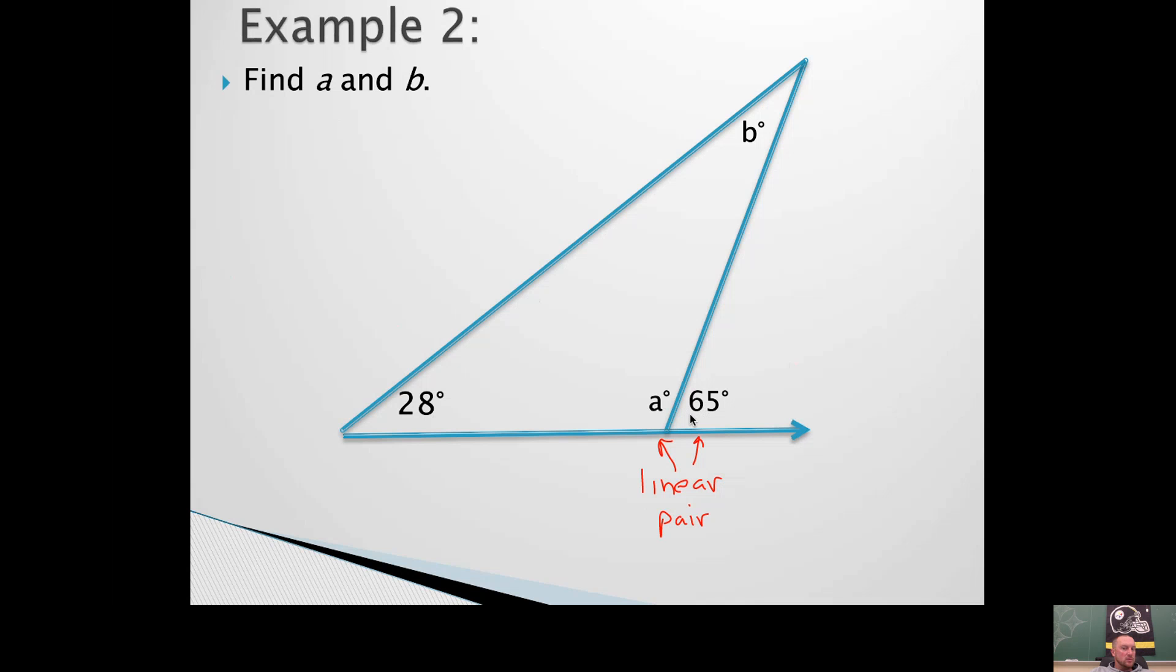Most of the time, you have an acute angle, like this one, and an obtuse angle, like that one. They can't be the same. Linear pairs are not the same. But they do add up to 180. So if you know the acute angle is 65, you can find the obtuse angle.